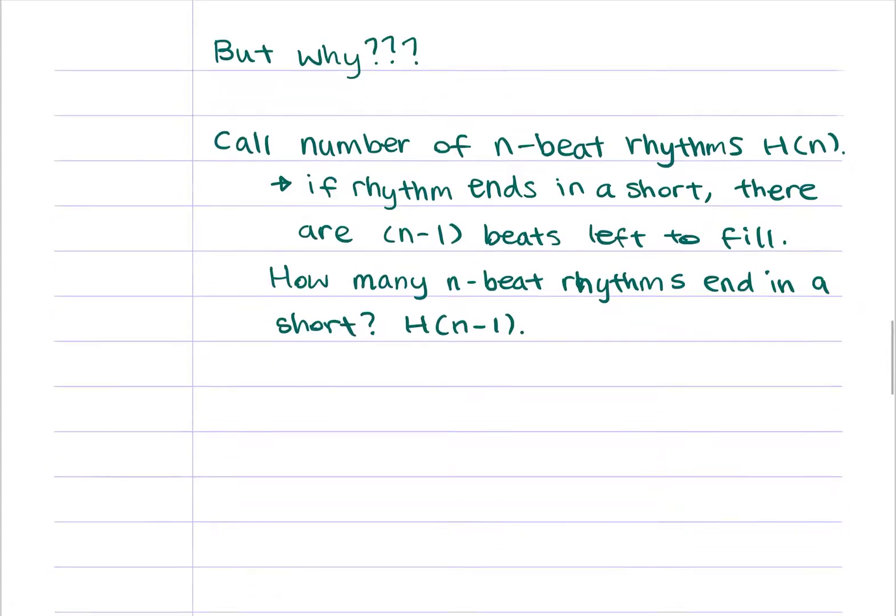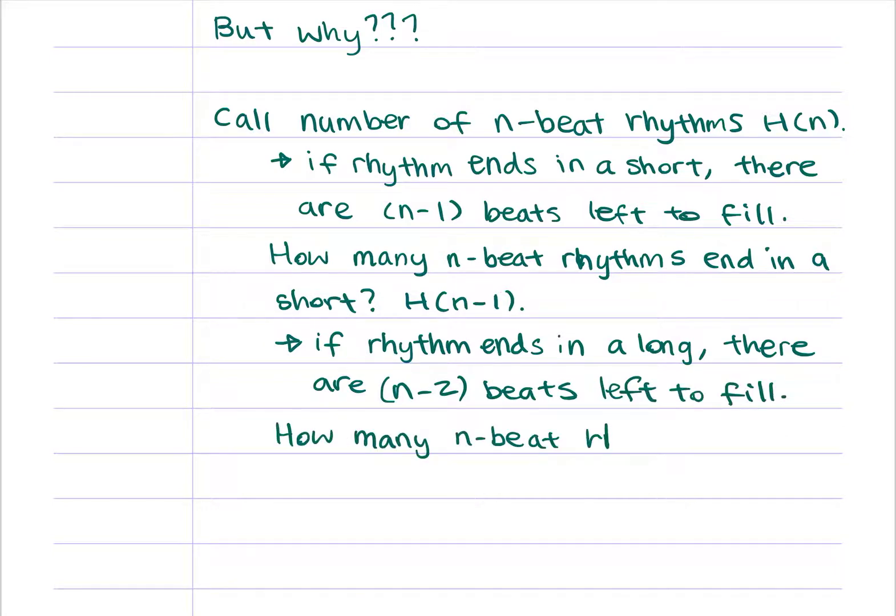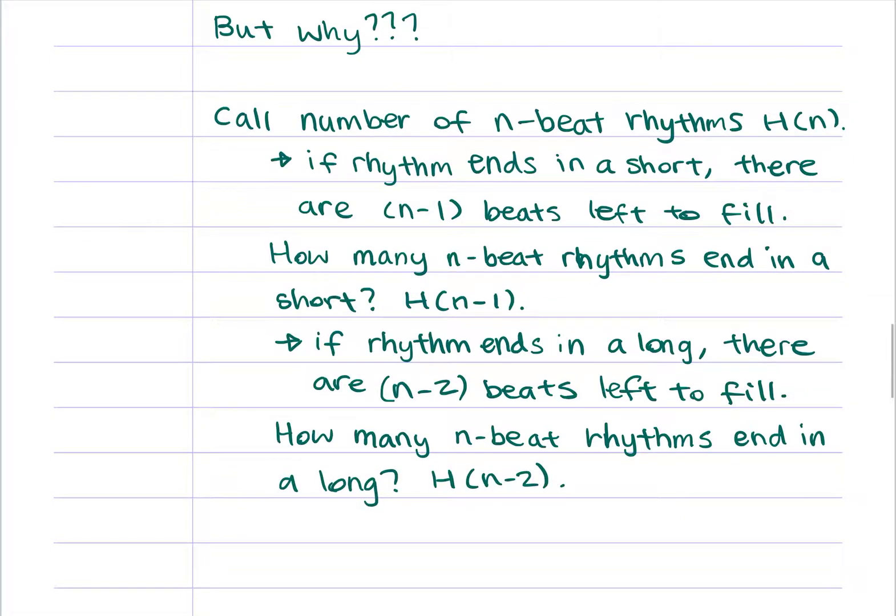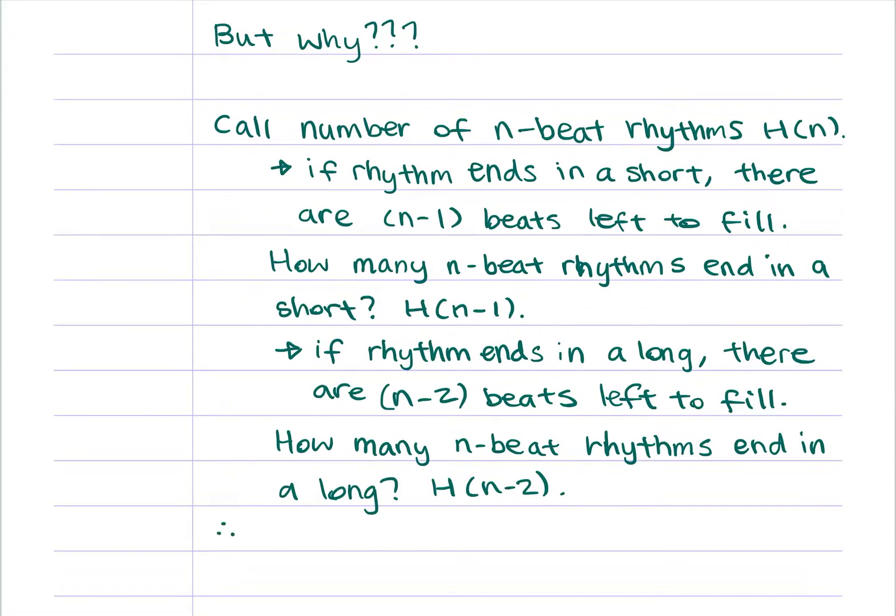If you have an n-beat rhythm that ends in a long, then you have n-2 beats left to fill. So, how many n-beat rhythms end in a long? Well, the number of n-2 beat rhythms, which is H of n-2. And, from there, we get that the number of n-beat rhythms, H of n, is equal to the sum of H of n-1 and H of n-2.